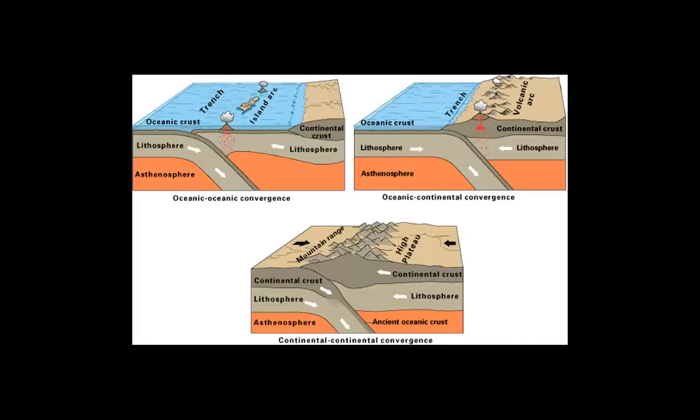There are three types of subductions. The first one is oceanic-oceanic convergence. This happens in the middle of the ocean. The other one is oceanic and continental convergence. And the one we're interested in is the continental-continental convergence, which is what happened in the case of Iran.